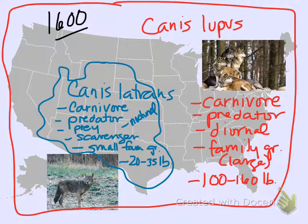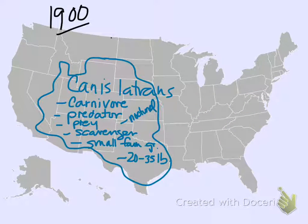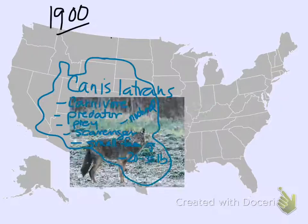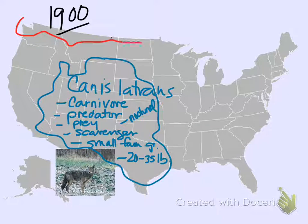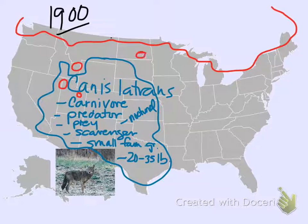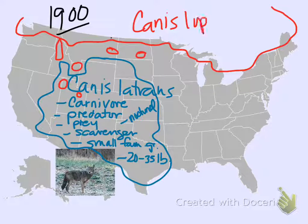So now let's fast forward about 300 years. In 1900, European Americans have been here for a while, and what's the general theme with predators? Kill them all. We've talked about the drive to exterminate predators across the U.S. Wolf territory now, in 1900, consists of some very isolated pockets — probably a few places in Yellowstone, some in the deep mountains of the West, a few places up in the Rockies. Wolves have been extirpated — made extinct in a specific local area — from most of the U.S.